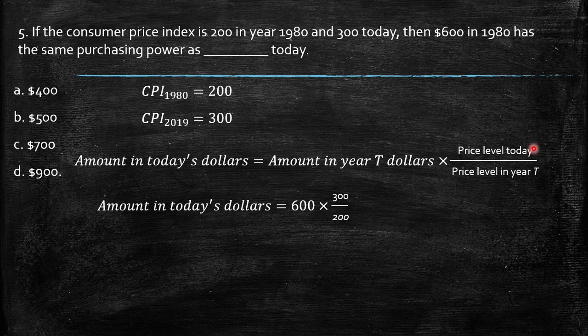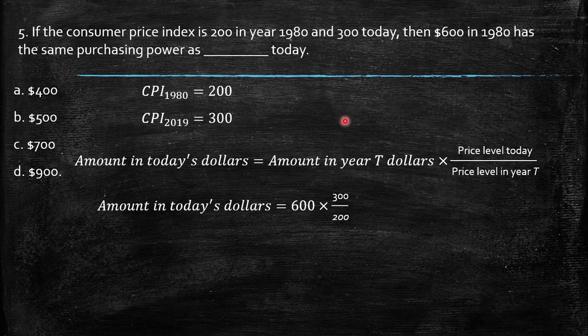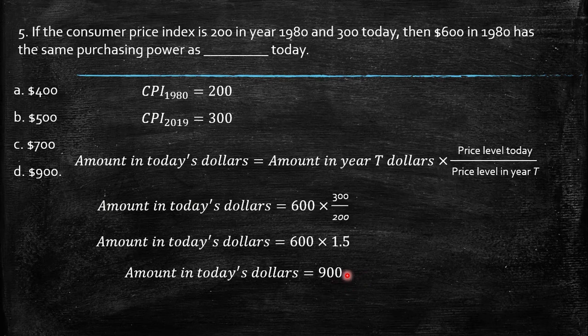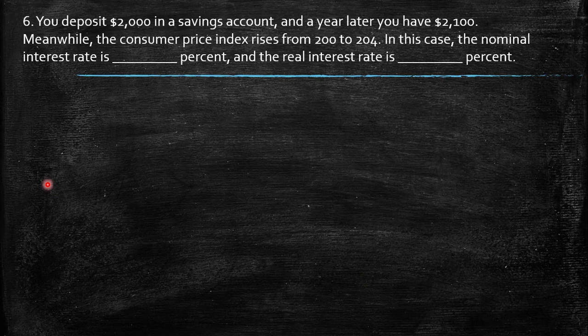This is naturally 1.5, so then we proceed with the multiplication and we get 900. So naturally it should be D, $900. Last, you deposit $2,000 in a savings account, and a year later you have $2,100.